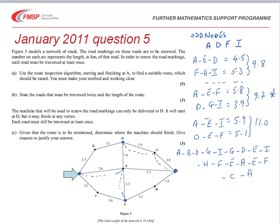We're asked to say which routes we repeated. We should look at the pairings that we used: A, E, F. So we repeated A, E and E, F. And then D, G, I, so D, G and G, I were repeated. The total length of our route is the 31.6 that we're told in the question plus the repeats that we've done, which were 9.7, giving a total of 41.3 kilometers.